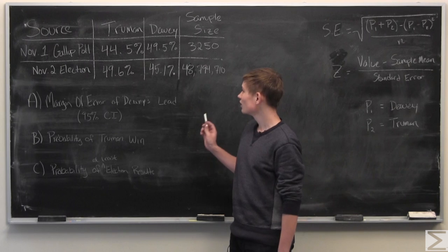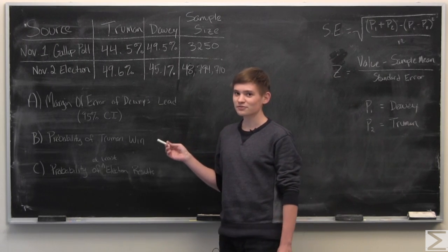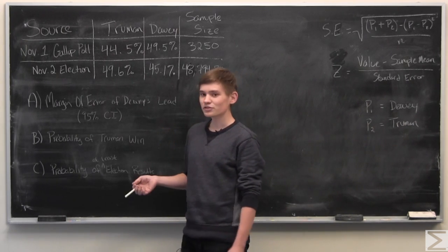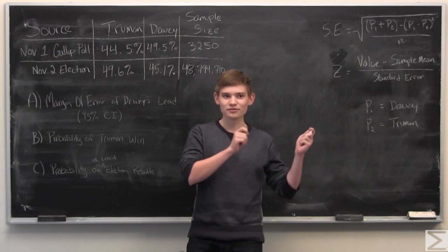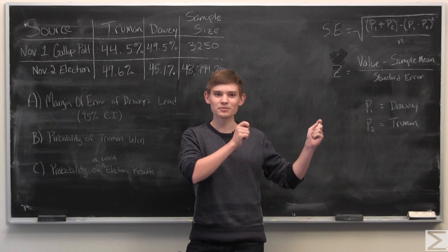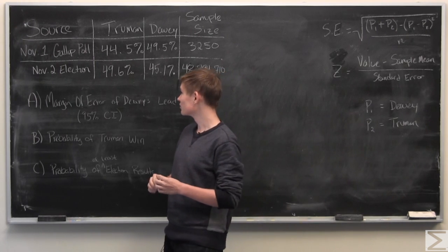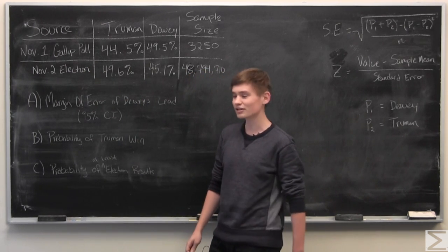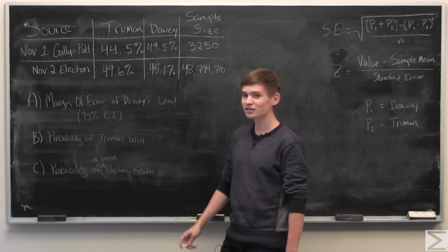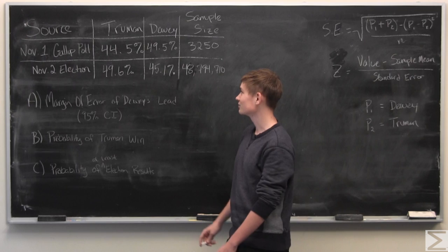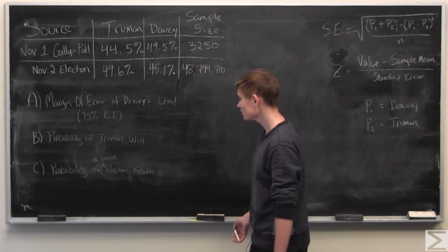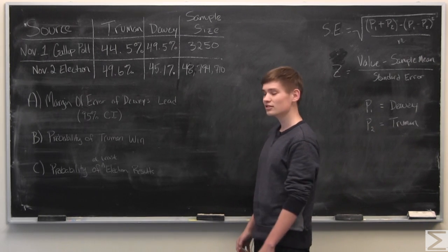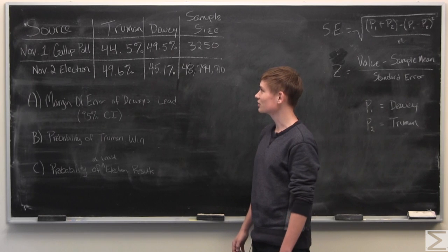Now, today's problem of the week involves the 1948 presidential election between Truman and Dewey. For those of you who don't know the iconic image of President Truman holding up a newspaper saying that Dewey won the election, the reason that happened is because the November 1st polling data, which was the day before the election, showed that Dewey was most likely going to win. But what actually happened is that Truman won, almost by a landslide. So the problem of the week was to go through this polling data and see how unlikely it was that Truman won this election.